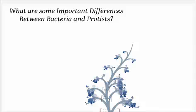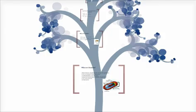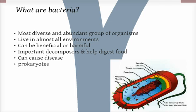The question I chose is: what are some important differences between bacteria and protists? First off, what are bacteria? Bacteria are the most diverse and abundant group of organisms on Earth. They live in almost all environments. Bacteria can be beneficial or harmful. They are important decomposers and help us digest food. This is how they are beneficial.